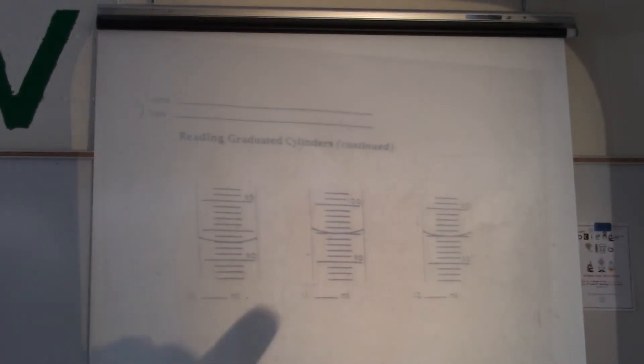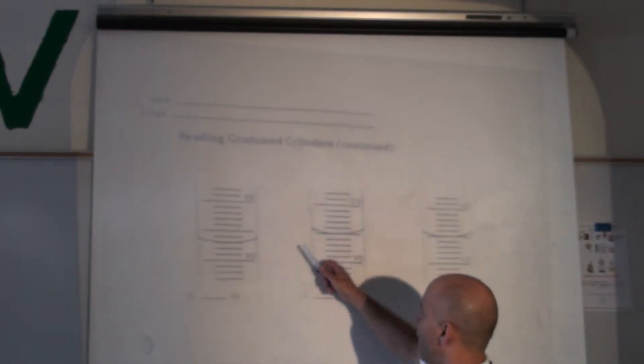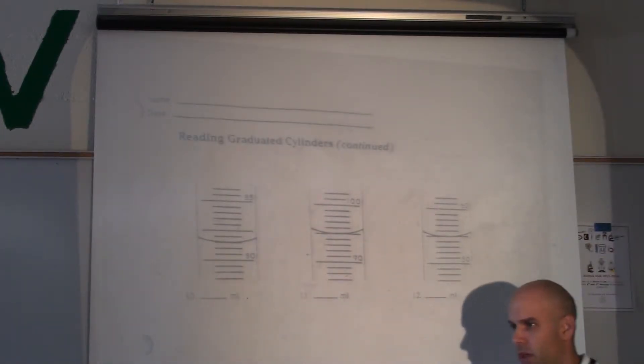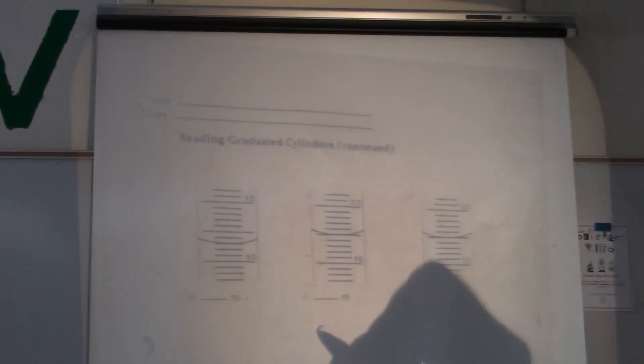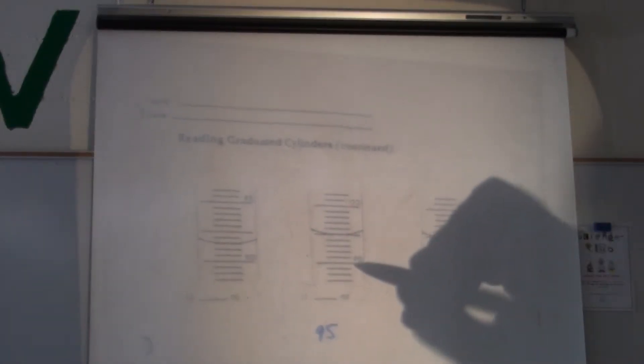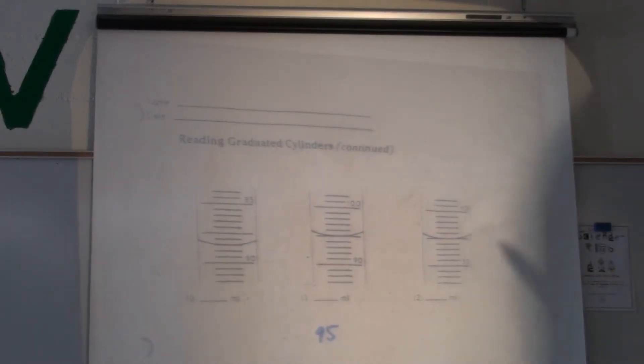Let's take a look at number 11 here first. Jared, what would you say the volume is for number 11, Jared? 95. What are the graduates, what are the lines going up by? One. One.